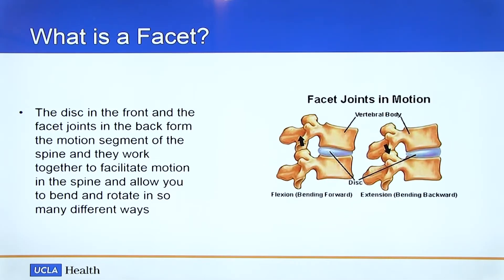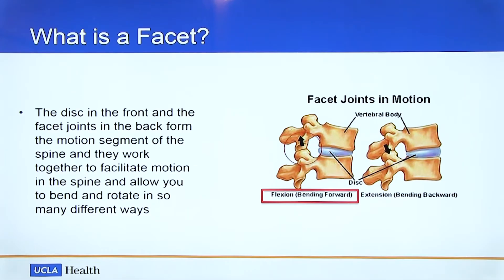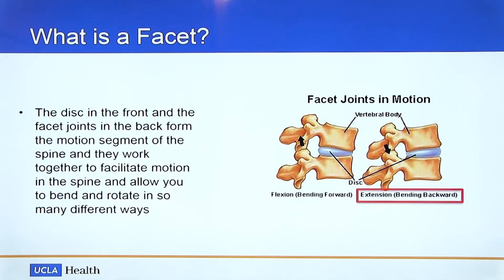This diagram shows how the disc and the facets change as we bend forward or bend backward. When we bend forward, the front part of the disc gets squished, and the joint in the back is distracted — pulling the two bones that comprise the joint apart from each other. Alternatively, when you bend backward, you squish the back part of the disc and push the joint together back there.